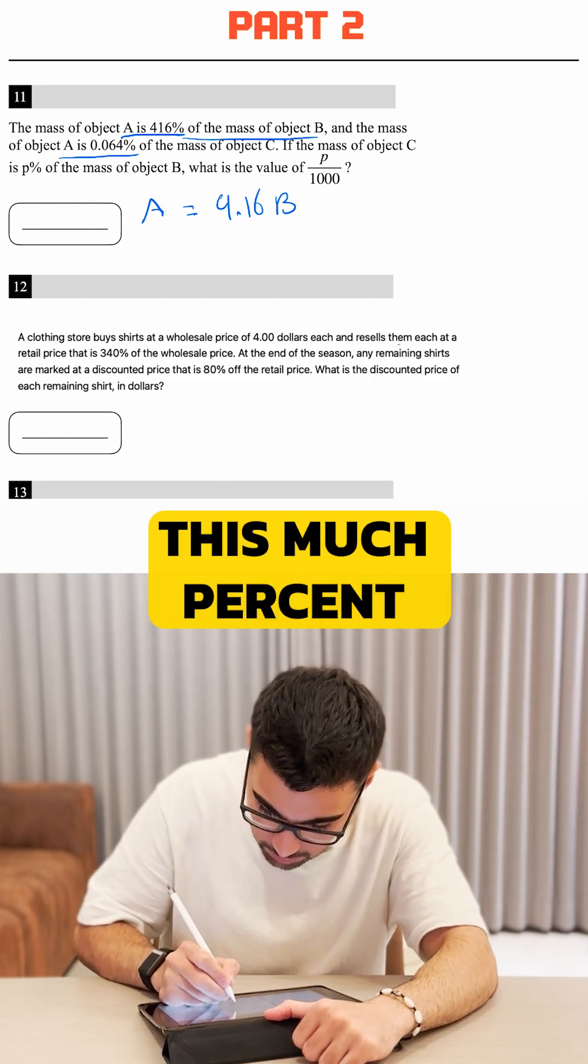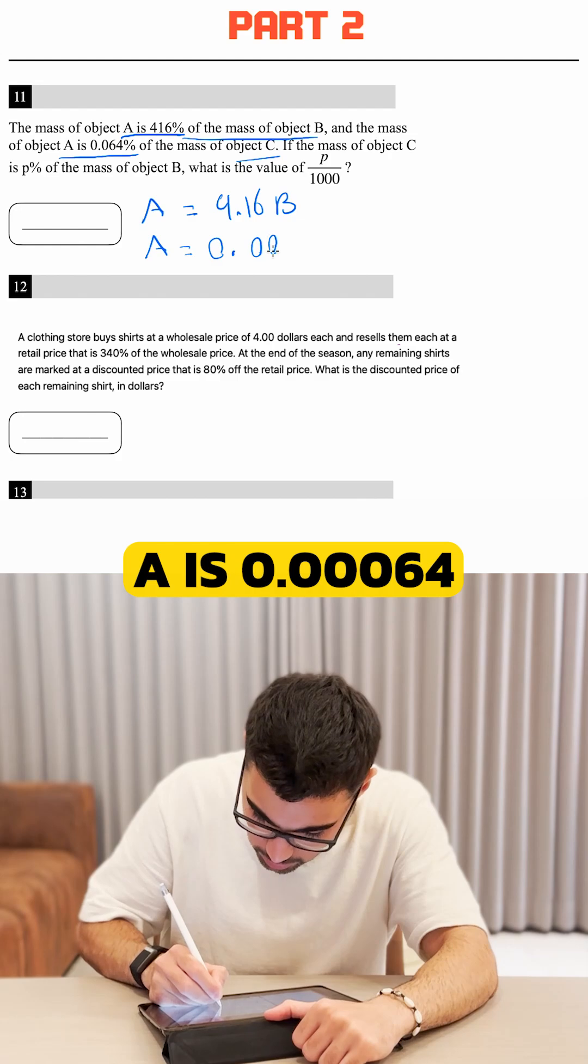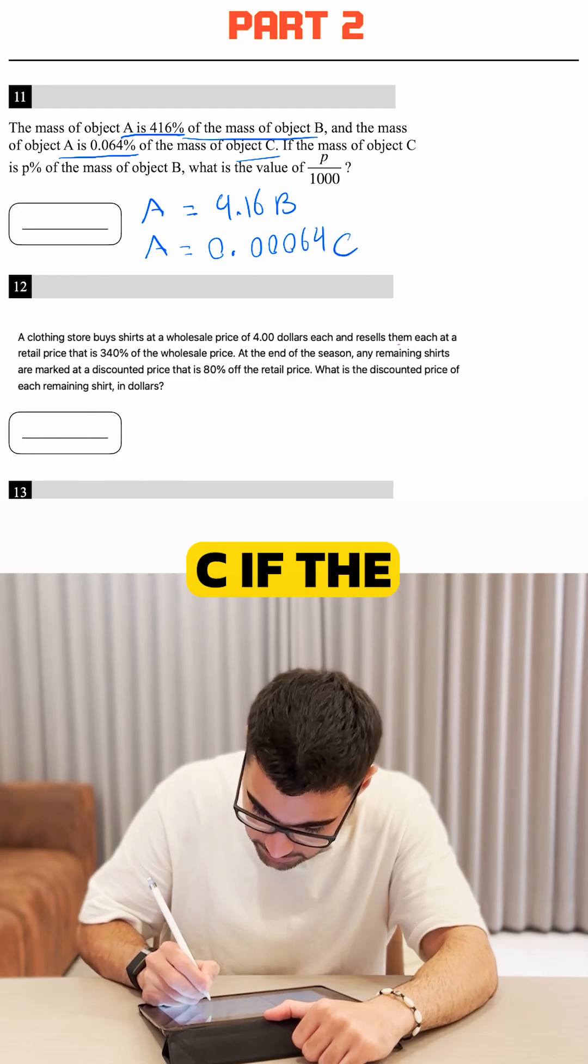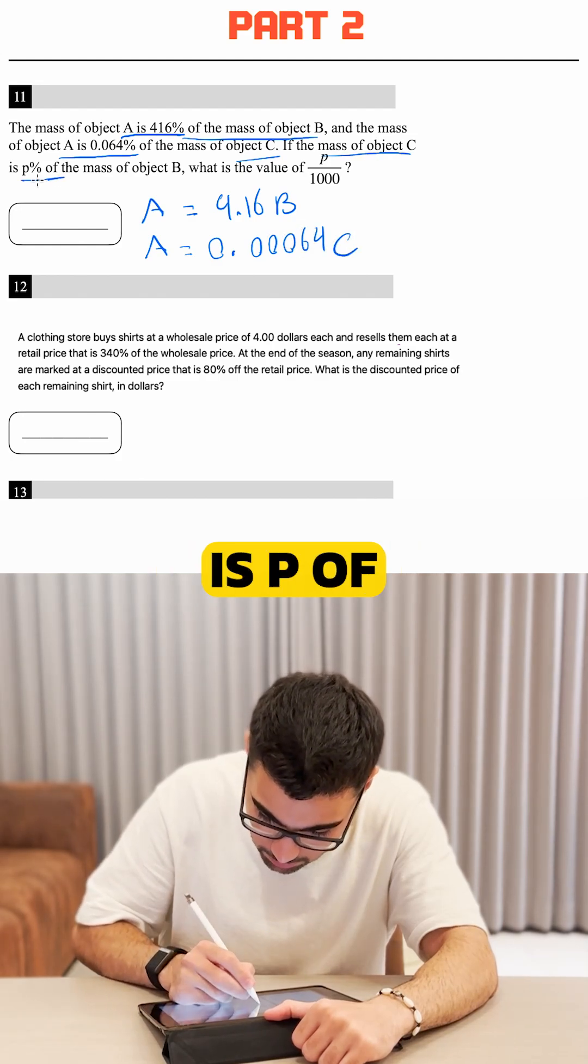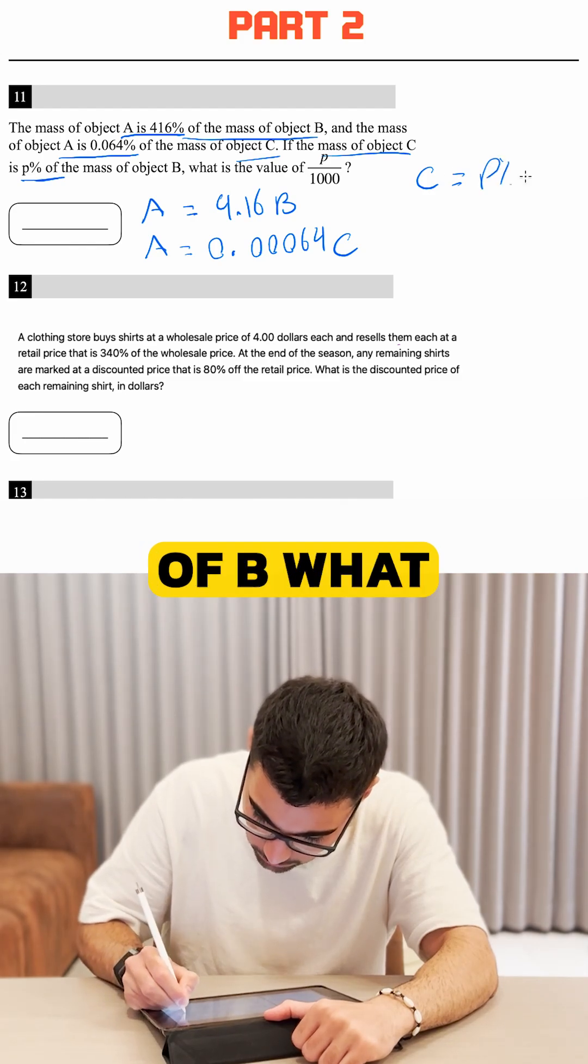And the mass of object A is this much percent of object C. So again, A is 0.00064C. If the mass of C is P percent of mass of B, so C is equal to P percent of B.